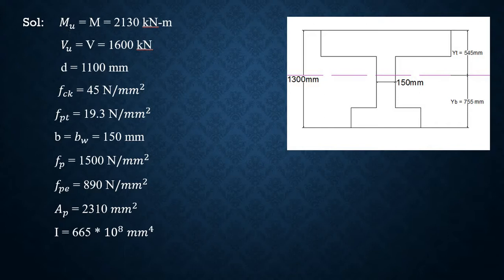Next is Mu or M = 2130 kN-m, Vu or V = 1600 kN, d = 1100 mm, fck = 45 N/mm², fpt = 19.3 N/mm², width of the web bw = 150 mm, fp = 1500 N/mm², fpe = 890 N/mm², Ap = 2310 mm², I = 665 × 10⁸ mm⁴. So these are the data given. First we should write down whatever data they have given and use the notations for it.